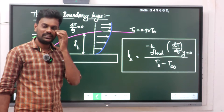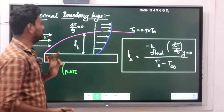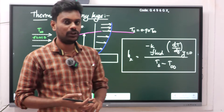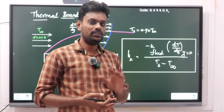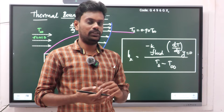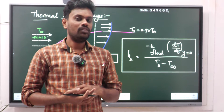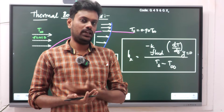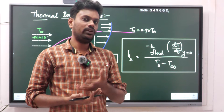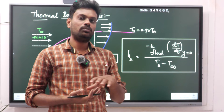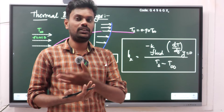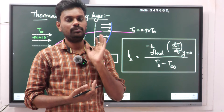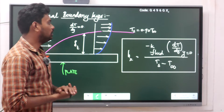Good evening students. The next topic is thermal boundary layer. In thermal boundary layer we will see how the temperature is varying with respect to fluid — this comes under convection. When a fluid like gas or liquid flows over an object such as a flat plate, how the temperature profile is created, based on what factors the temperature is rising, and how it reaches the equilibrium state — we will discuss all of this in the thermal boundary layer.